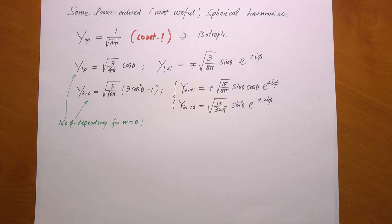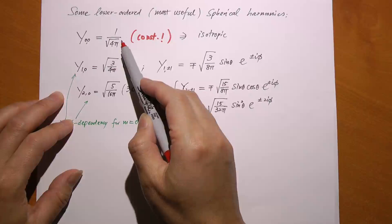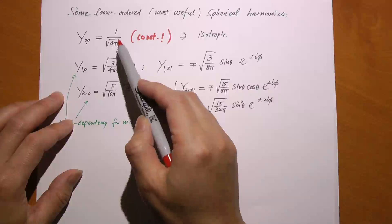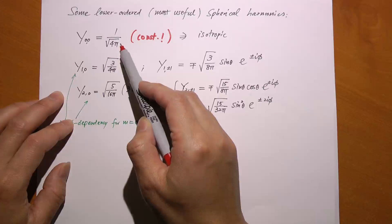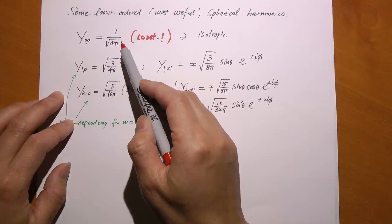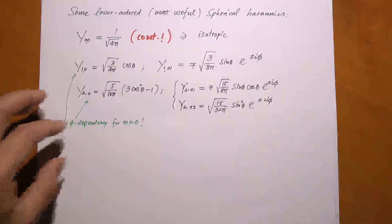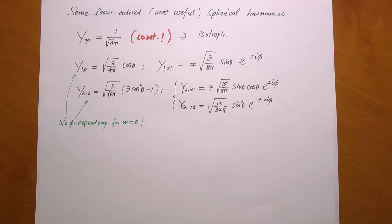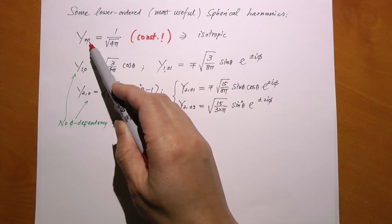When l equals zero, m has no choice but to remain zero. It turns out Y zero-zero is a constant — it's the only spherical harmonic that is a constant. This means there is no angular dependency of the wave function. The wave function has no preferable direction in space; it's totally isotropic. So the electron cloud will look like a sphere with no angular preference. This is a unique feature of the lowest-order spherical harmonic.